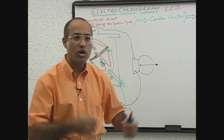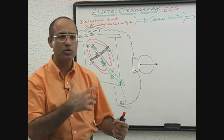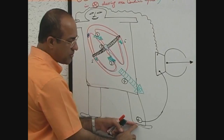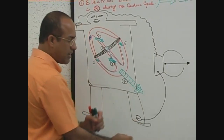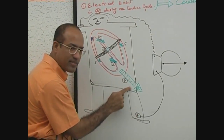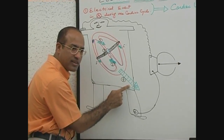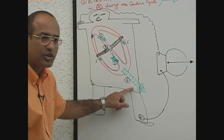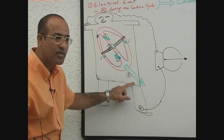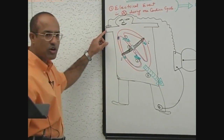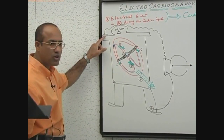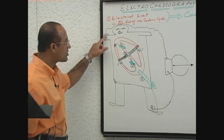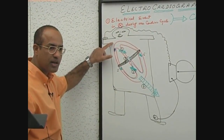We can apply electrodes on the body surface and pick up the electrical activity going on deep in the heart. The positive electrode is applied on the foot because it is convenient. Whatever electrical current is coming to the junction of the left lower limb and trunk will be conducted to the foot. So applying the electrode to the foot is equivalent to applying it at the junction of the left lower limb and the trunk. Similarly, applying the electrode on the right arm senses the same activity as applying it at the junction of the right upper limb and the trunk.